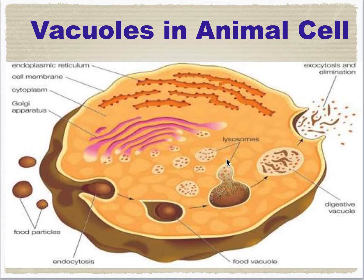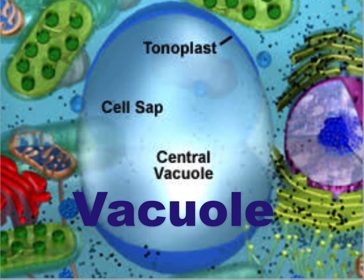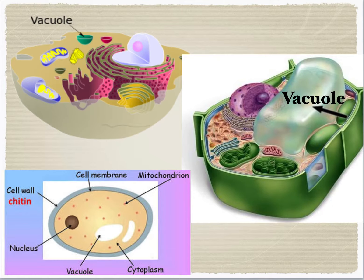This organelle basically has no specific shape or size — its structure varies according to the needs of the cell. The function and significance of the vacuole also varies greatly according to the type of the cell, with much greater prominence seen in plant cells.